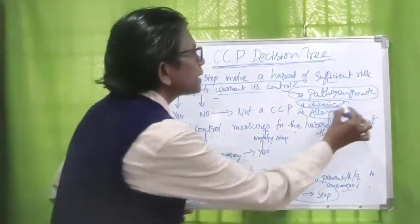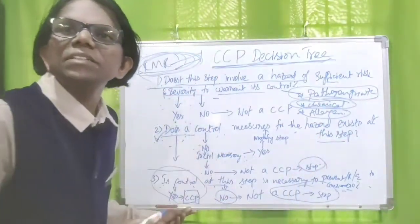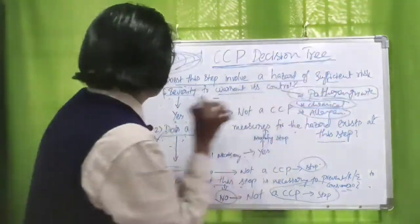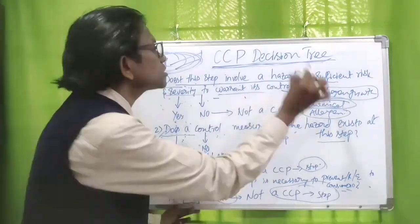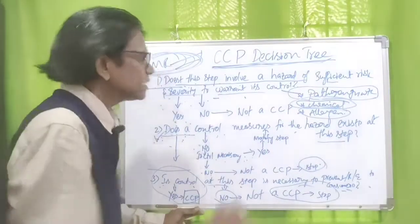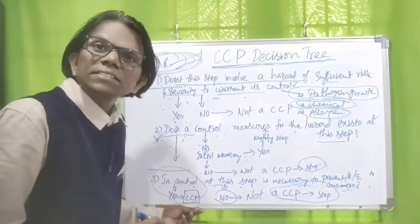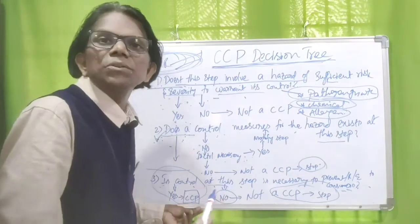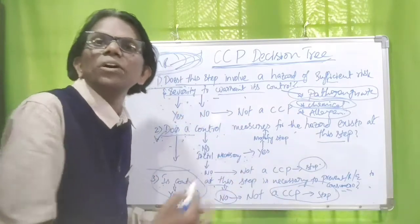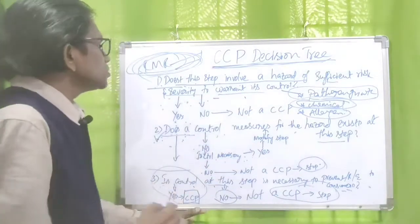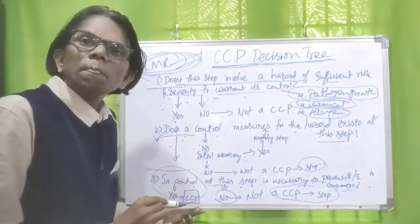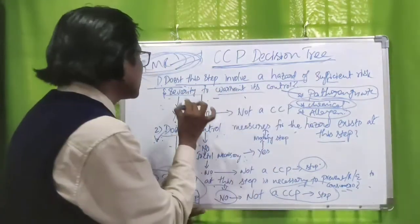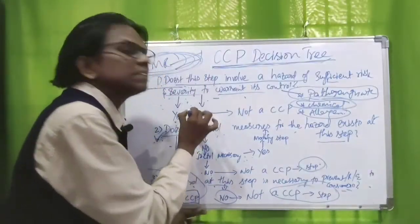Now we will take the chemical hazard — aquaculture drugs at raw material receiving stage. Does this step involve a hazard of sufficient risk and severity to warrant its control? Yes, because suppliers may add drugs to prevent mortality during farming, and these drugs can be carcinogenic and harmful to health. So this is a significant hazard.